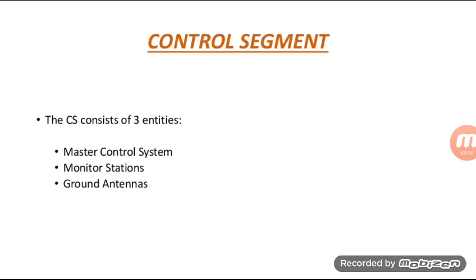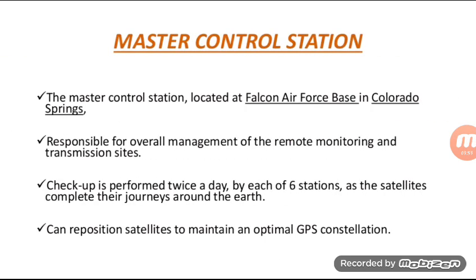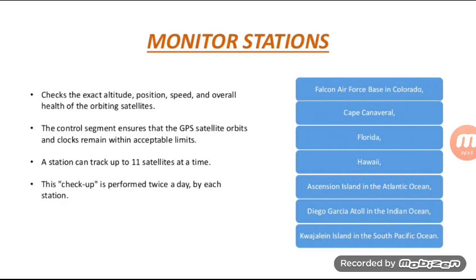The control segment consists of three entities: the Master Control Station, Monitor Stations, and Ground Antennas. The Master Control Station is located at Falcon Air Force Base in Colorado Springs and is responsible for overall management of the remote monitoring and transmission sites. A checkup is performed twice a day by each of the six stations as the satellites complete their journeys around the earth. It can also reposition satellites to maintain an optimal GPS constellation.